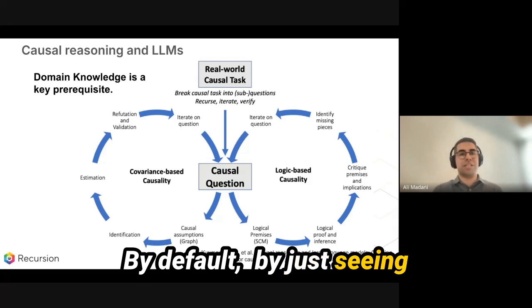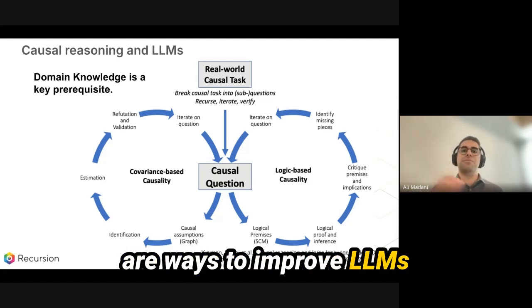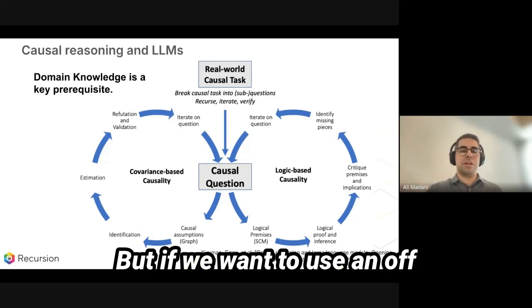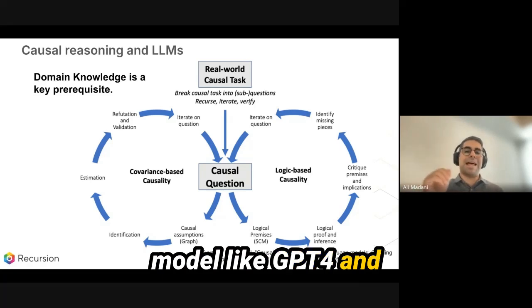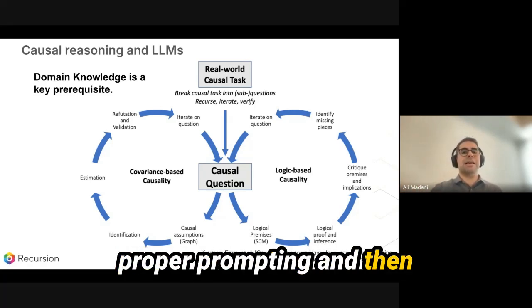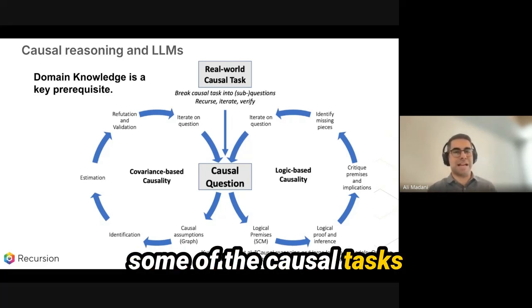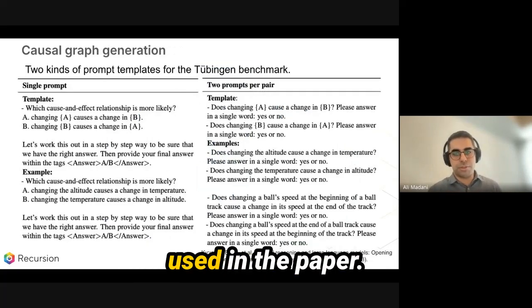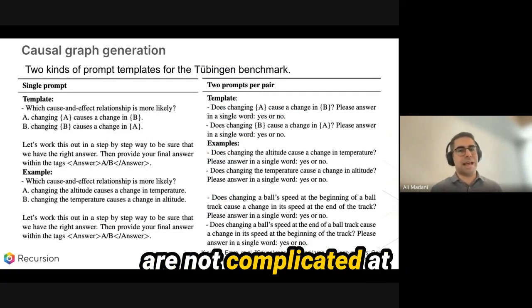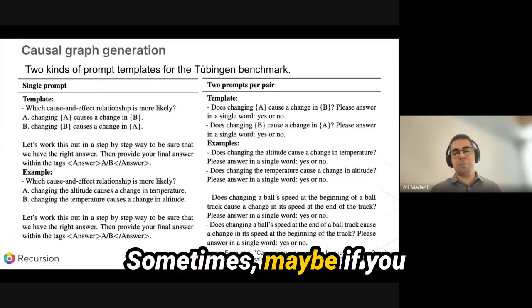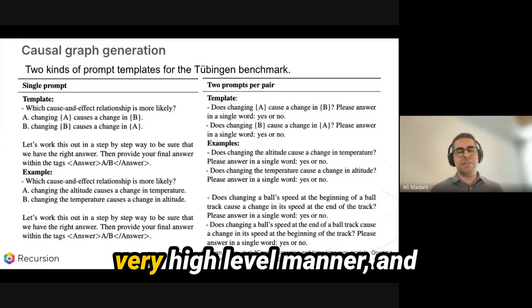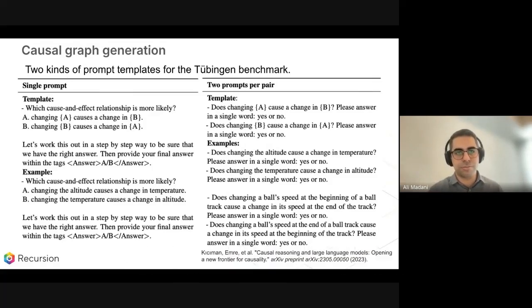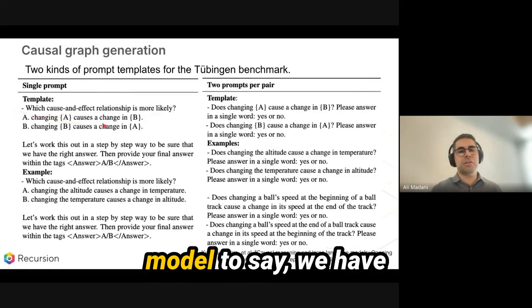By default, with simple prompting, there are ways to improve LLMs — for example through reinforcement learning. But if we want to use an off-the-shelf large language model like GPT-4 with proper prompting and ask it to tackle causal tasks, the domain knowledge must already be there. This is a simple example of the prompting used in the paper. The prompts are not complicated at all, but they are very smart. Sometimes we provide context at a high level and go through an iterative process with chain-of-thought reasoning to eventually get the answer.